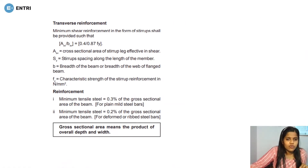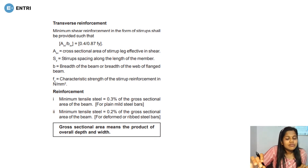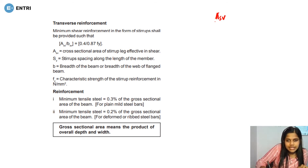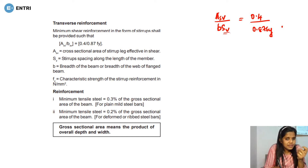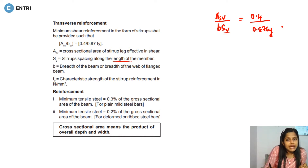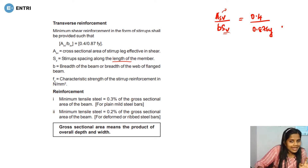This is the transverse reinforcement. We model the shear reinforcement in the form of stirrups. The spacing equation for transverse reinforcement is: Asv by B·Sv is equal to 0.4 by 0.87Fy, where Sv is the spacing along the length of the member, and Asv is the cross-sectional area of the shear stirrup legs. B is the breadth, 0.4 and 0.87Fy is the characteristic strength.